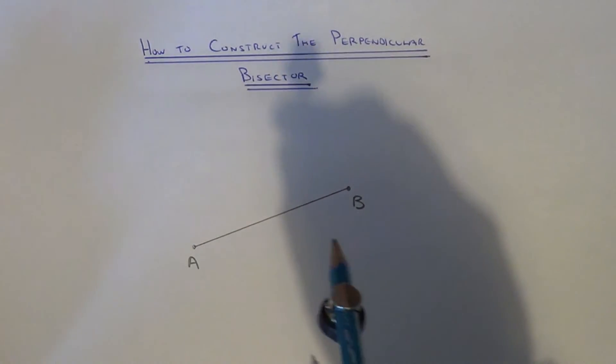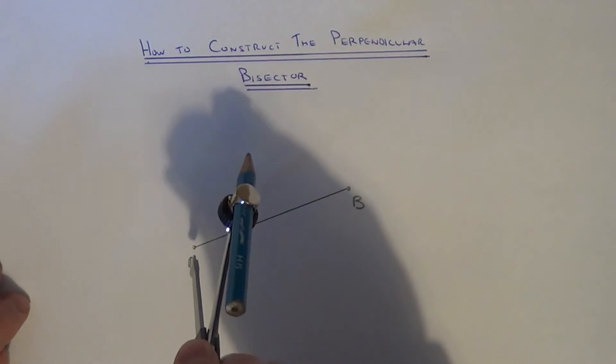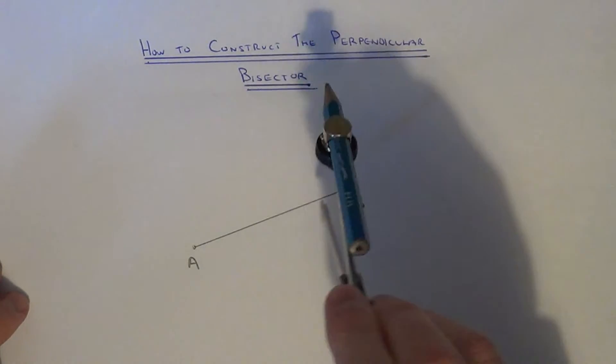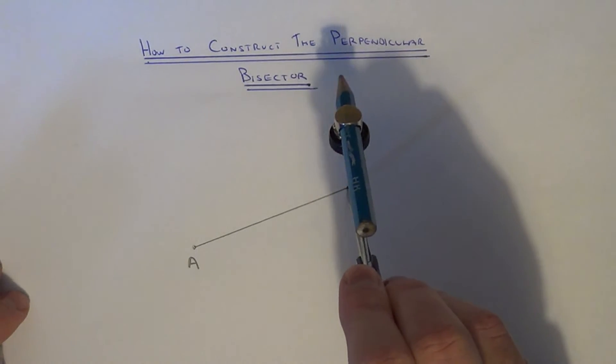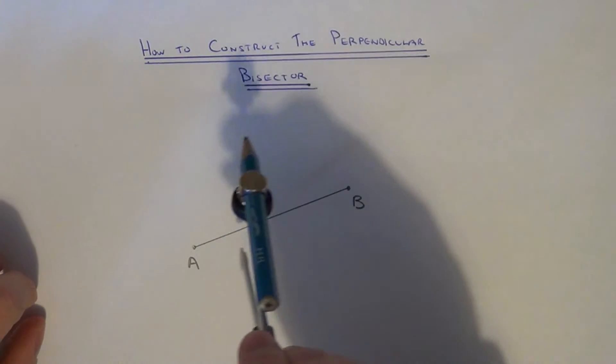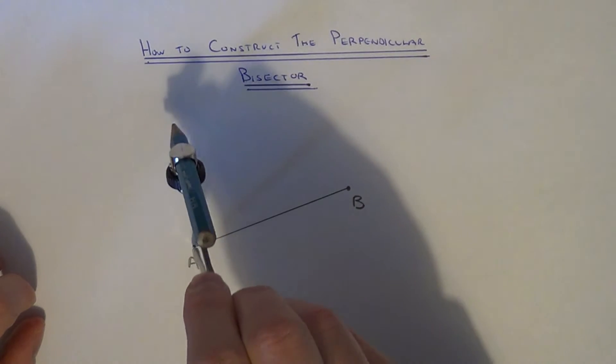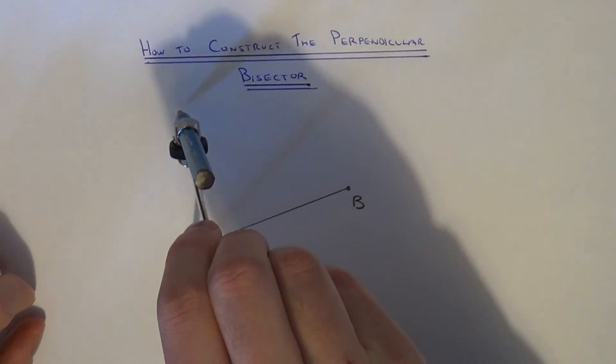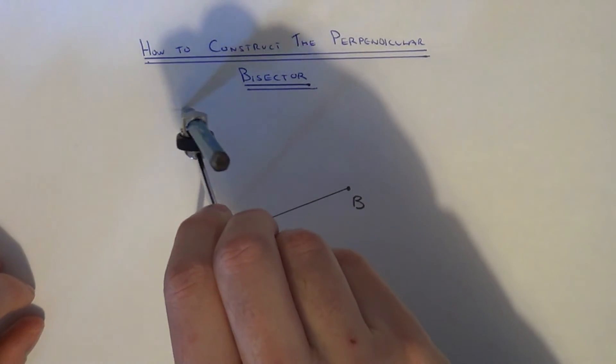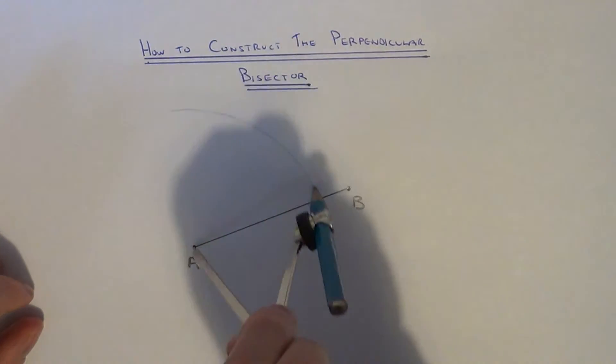Next, put your compass point on A and your compass point on B and do two arcs above and below the line.